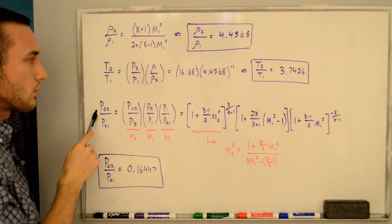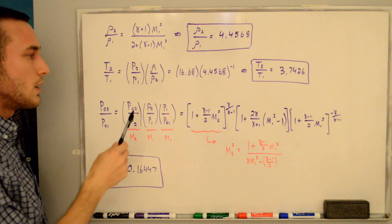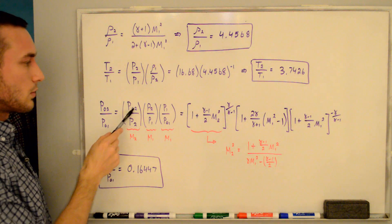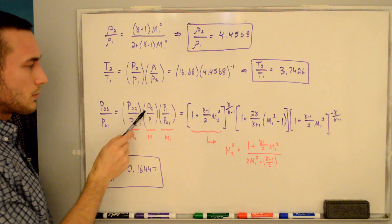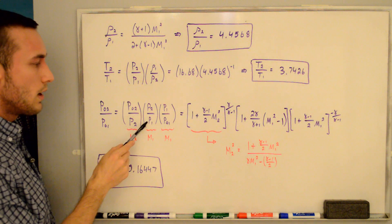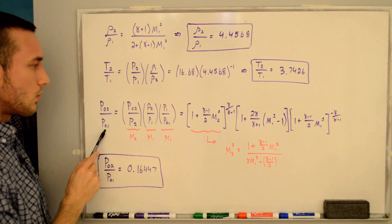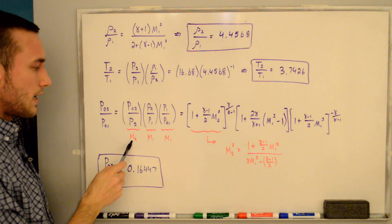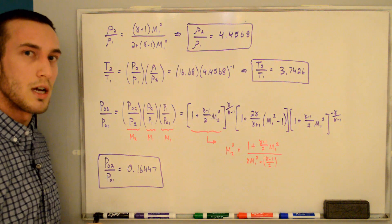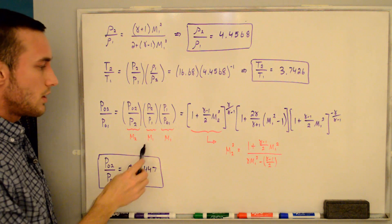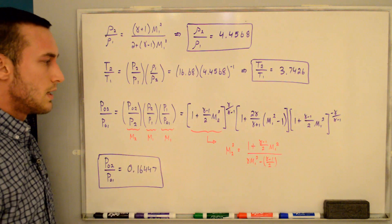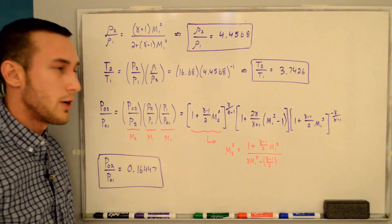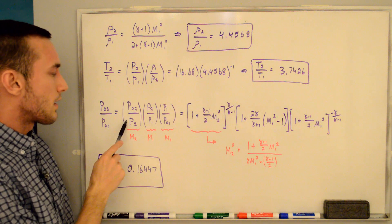Now for the stagnation pressure ratio p02/p01, which I didn't derive in my normal shock relations video. We can write it in terms of known pressure ratios: p02/p01 = (p02/p2) × (p2/p1) × (p1/p01). The first term is an isentropic relation at the downstream state, a function of M2. The middle term is the static pressure ratio, a function of M1. The last term is the stagnation-to-static pressure ratio flipped, also a function of M1.